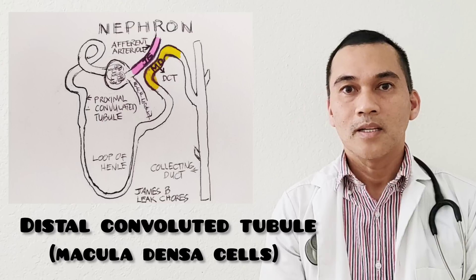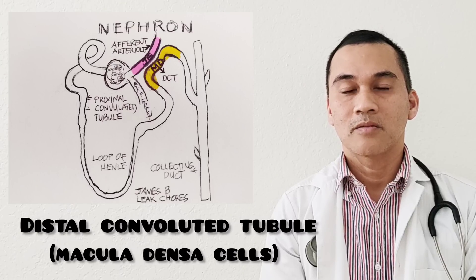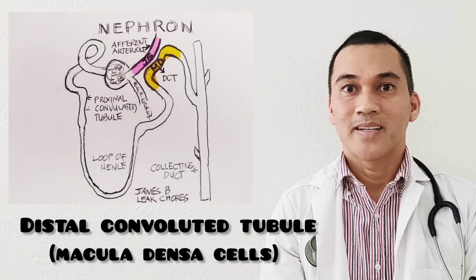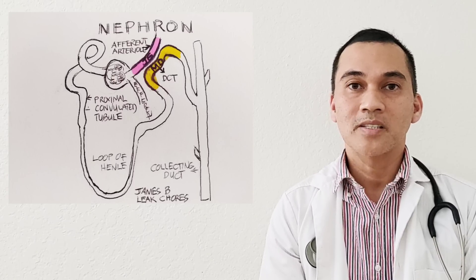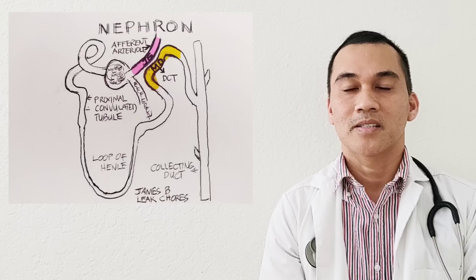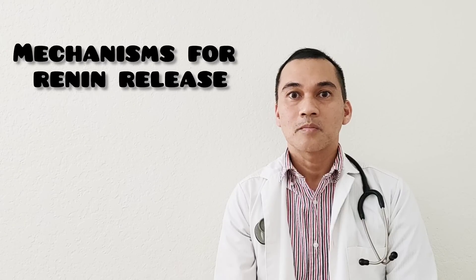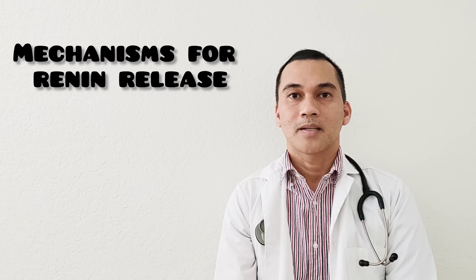The one in yellow is the distal convoluted tubule, and that is where the macula densa cells are located. So we have two important cells here: the juxtaglomerular cells and the macula densa cells. There are three mechanisms that warrant the secretion of renin.